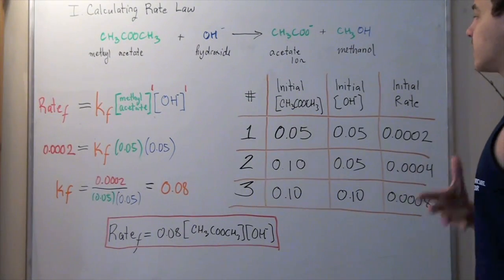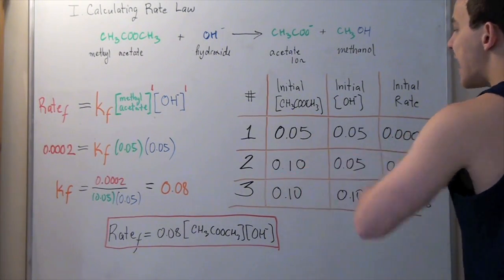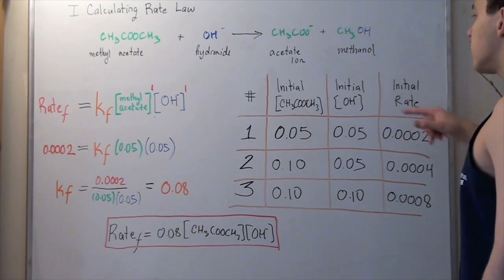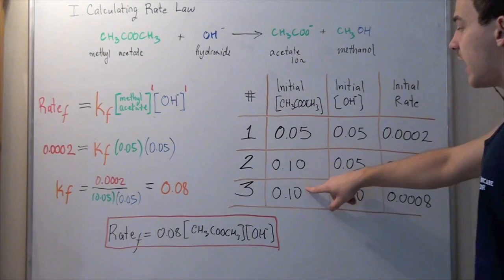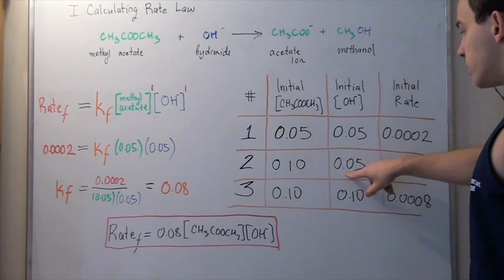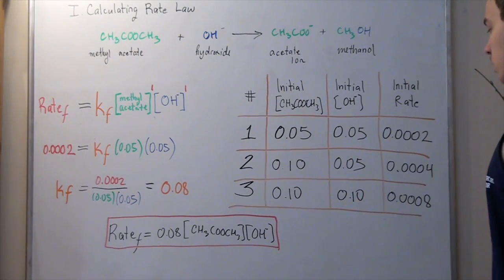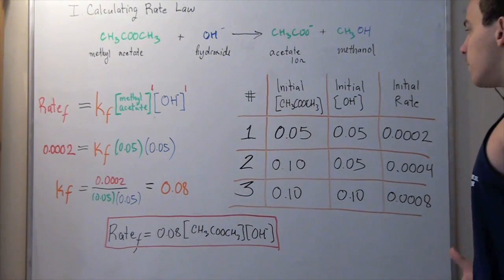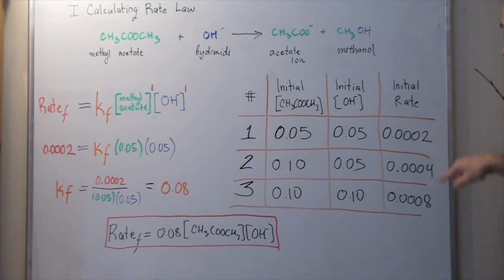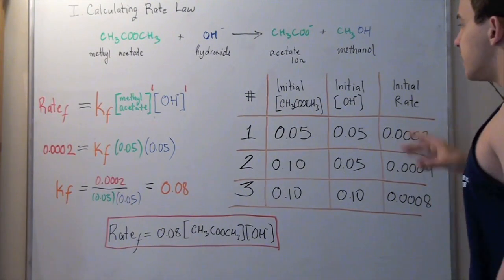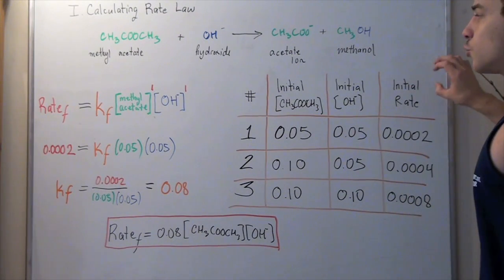Now we conduct the same experiment, but we keep our initial concentration of methyl acetate the same at 0.1 molar and double our initial concentration of hydroxide from 0.05 molar to 0.1 molar. We see that when we double our initial concentration of hydroxide, our initial rate also doubles. This means that hydroxide concentration is also directly proportional to our rate.